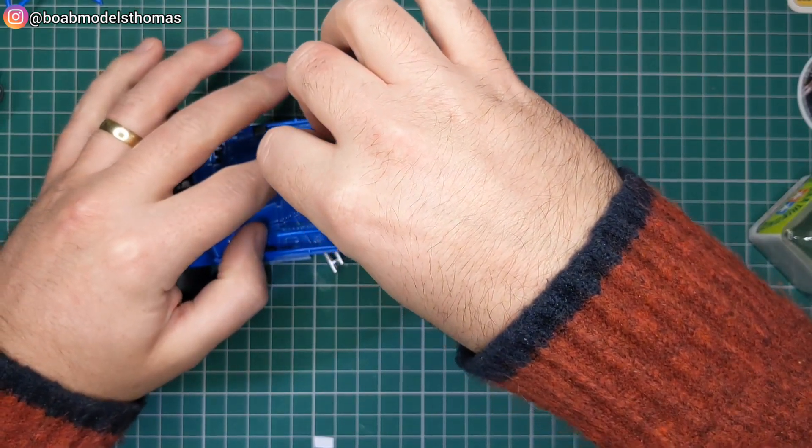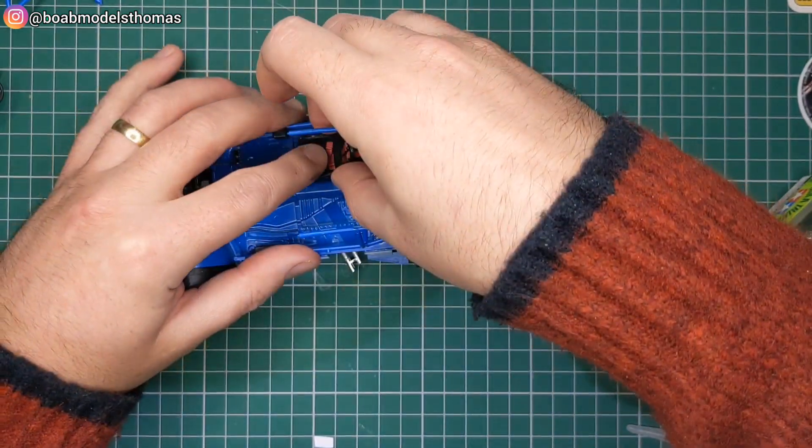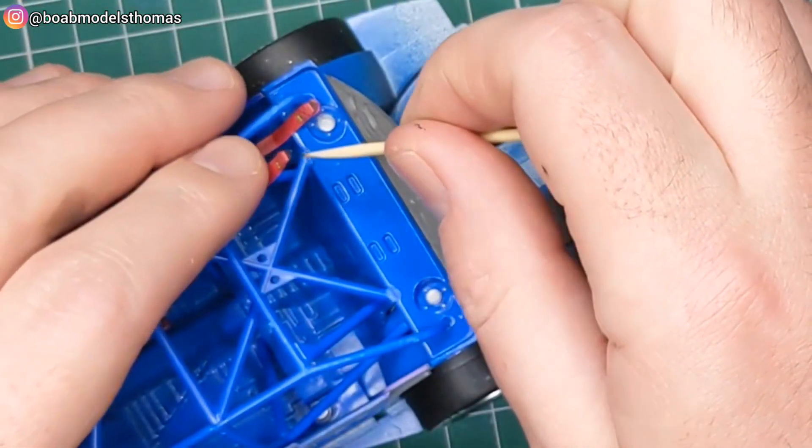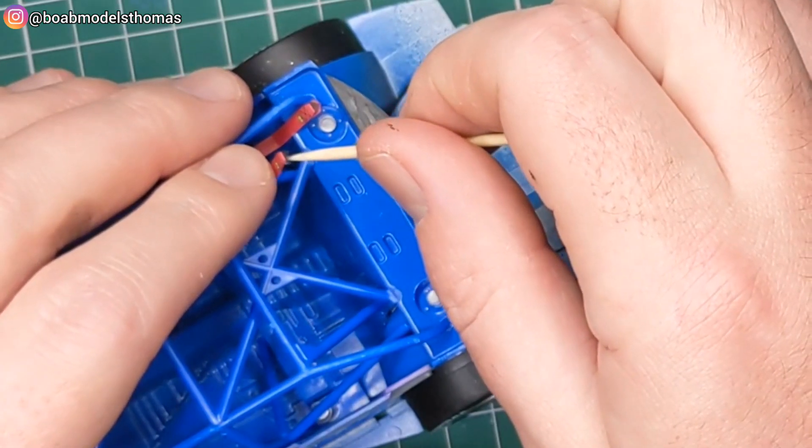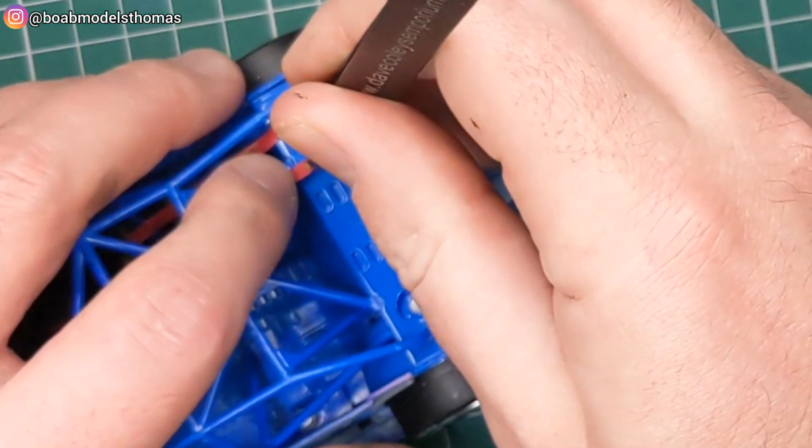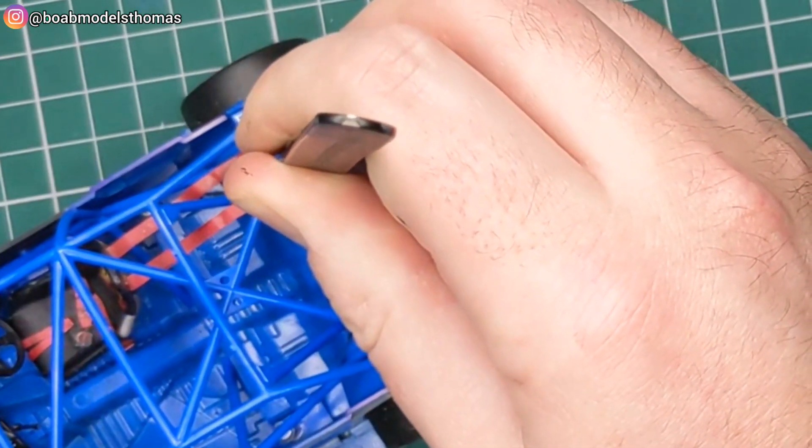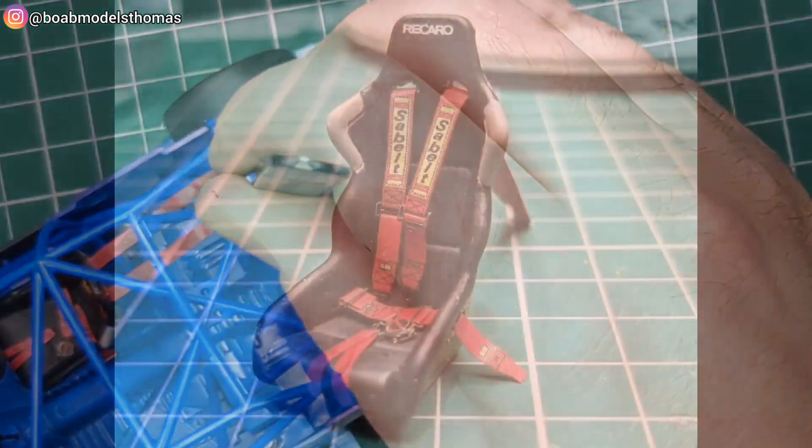And then here it was being test fitted into the interior of the car. I fit this with a little bit of super glue to the back parcel shelf section here. But remember you can always look at reference images to see where it really would be.